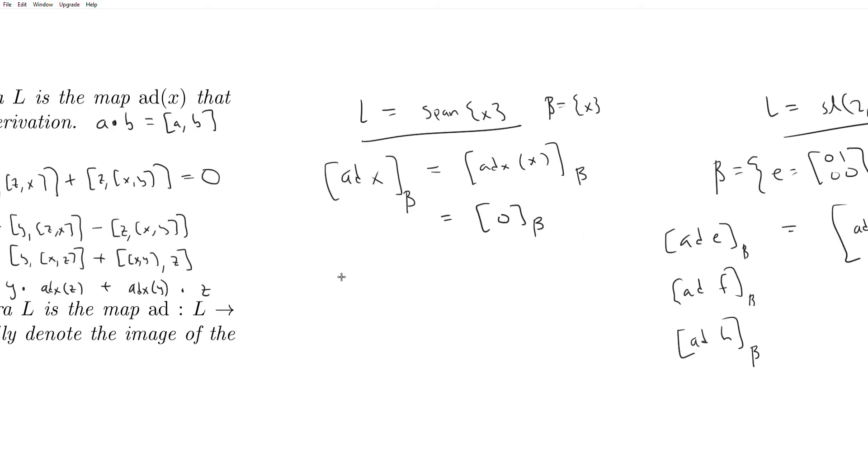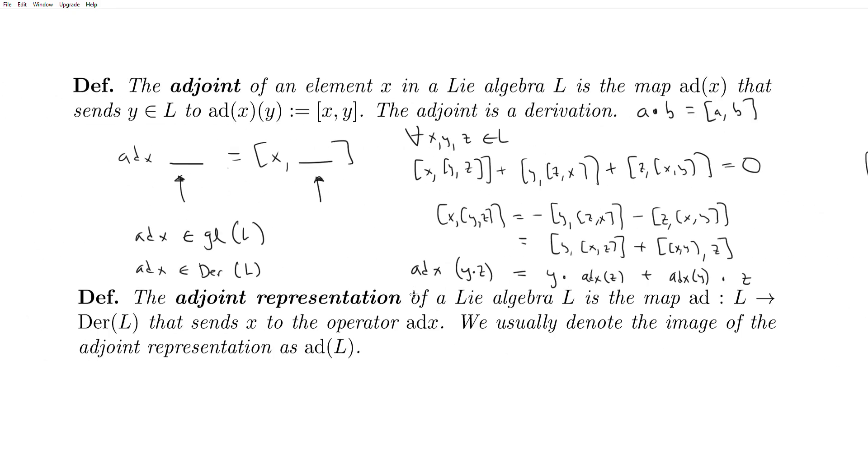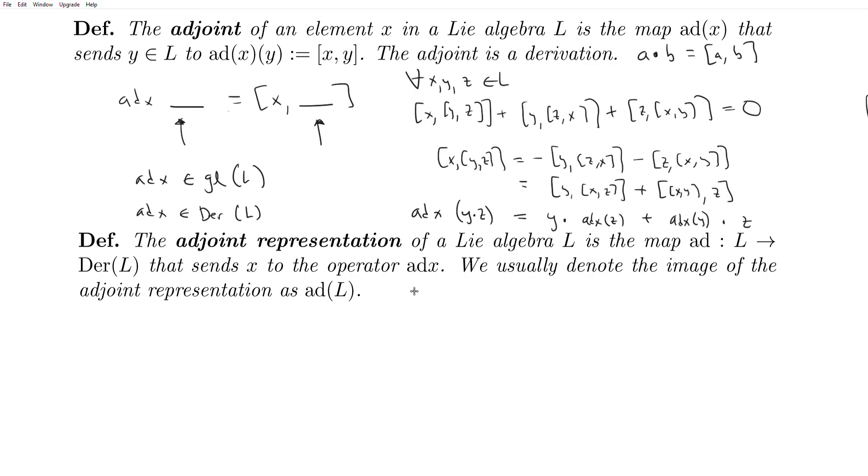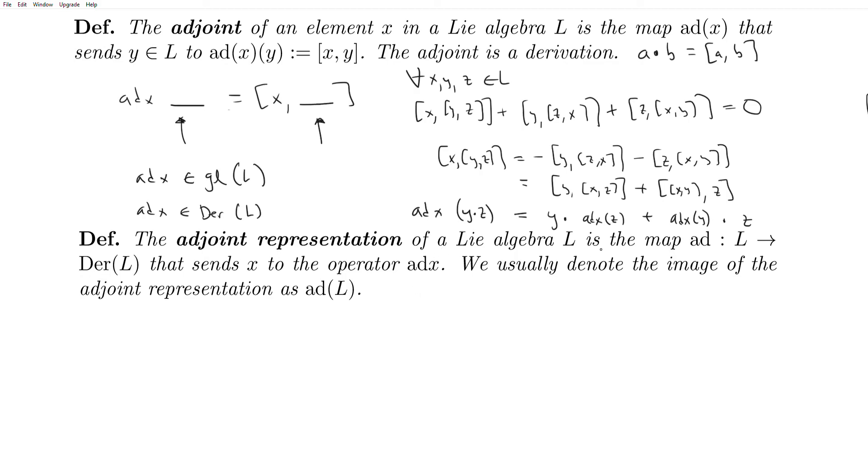And so now we'll come back, and we'll look more at this stuff. This is like central to what we're going to study. And so the adjoint representation of a Lie algebra L is the map ad, which sends L to Der(L). So that sends X to the operator ad(X). And so we usually denote the image of the adjoint representation as ad(L). And so this is one of the most important representations we'll study.